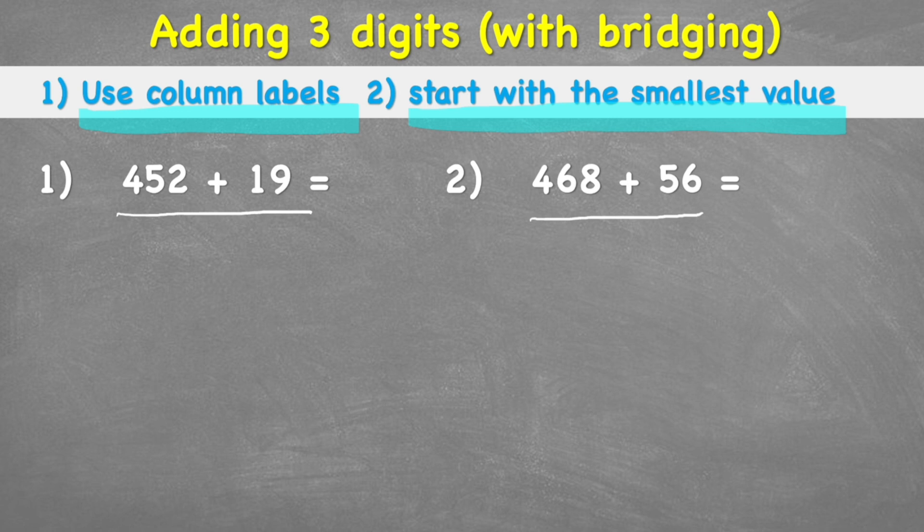First of all, when looking at the number 452 add 19, it's important to put our column labels on top. Let's have a look at 452 to start with. I can see the two is in the ones column, the five in the tens, and the four in the hundreds. With the 19, the nine is in the ones and my one is in the tens column. When I put my ones, tens, and hundreds in my columns for column addition, it makes it much easier to put the numbers in the right place.